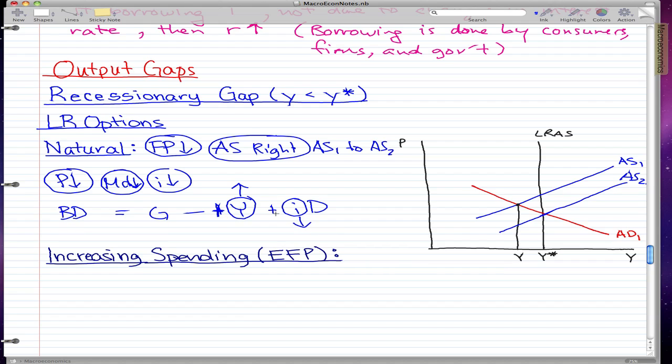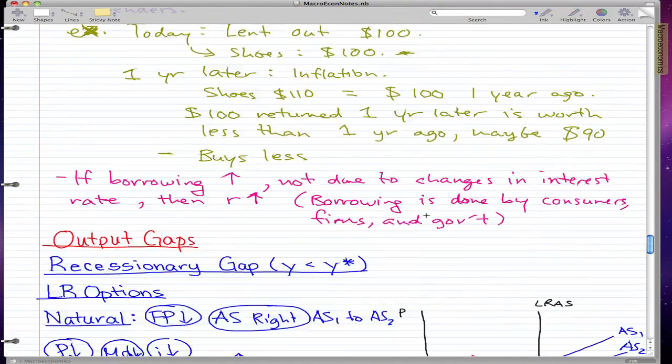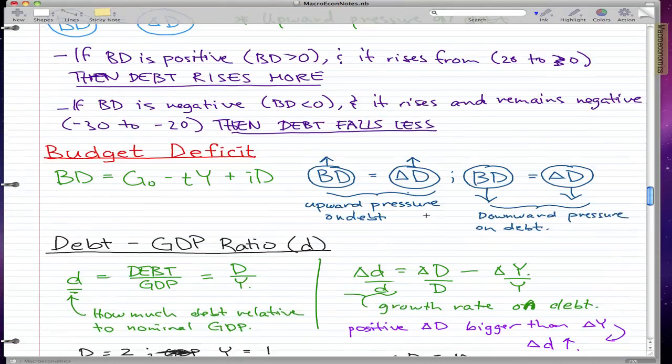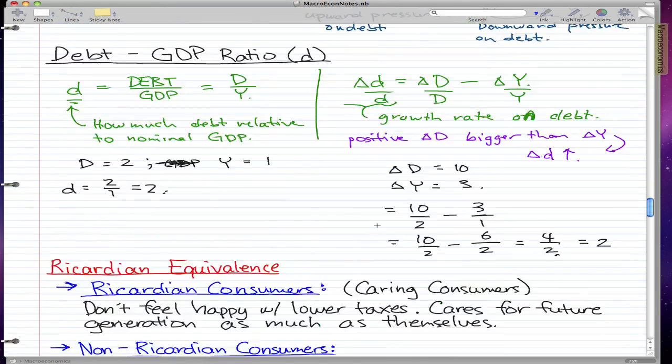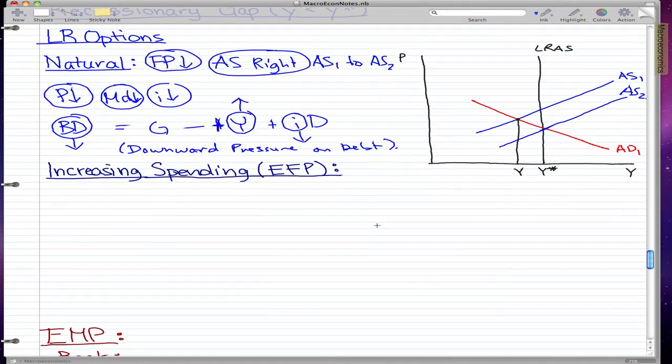So then we don't have to pay that much interest. So essentially, our direction of the budget deficit, now this is something new that we haven't seen yet, is that when our income rises and we don't have to pay as much interest as before, our interest rate fell, then our budget deficit also falls. And when this happens, we have a downward pressure on debt. And this can be seen, let me just go back to our notes from the previous video. When BD goes down, downward pressure on debt. That is exactly what happened in this case.